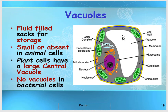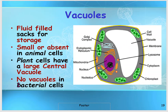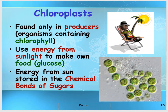The next organelle is the vacuole. In plant cells, you can see a large central vacuole that stores food substances and whatever the plant needs to store. There is no vacuole in bacterial cells, and if found in animal cells, the vacuoles will be much smaller.